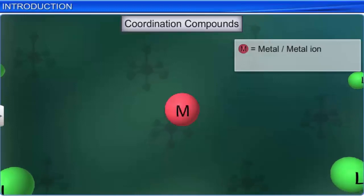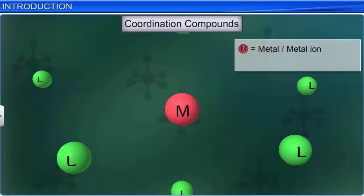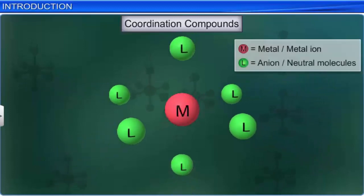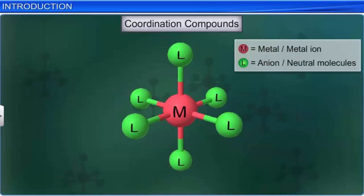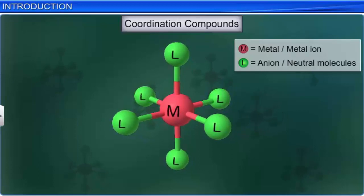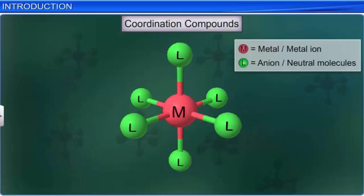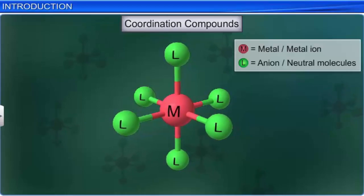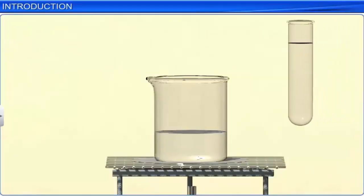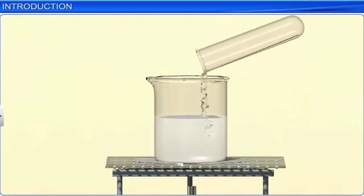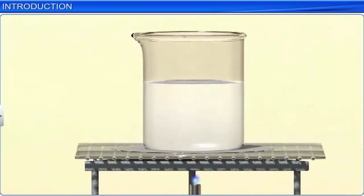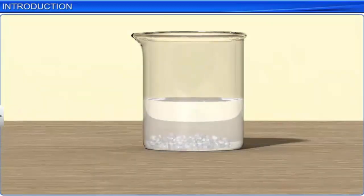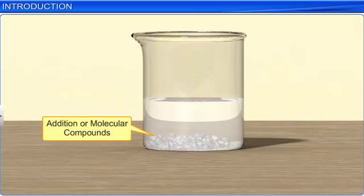Complex compounds are a special class of compounds in which the metal atoms or ions are bound to a number of anions or neutral molecules. In modern terminology, these compounds are called coordination compounds. Coordination compounds or complex compounds are a type of addition compounds. When two or more stable compounds are allowed to combine in stoichiometric ratios, crystalline compounds are formed. These are known as addition or molecular compounds.